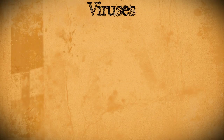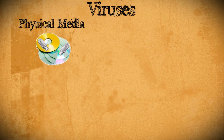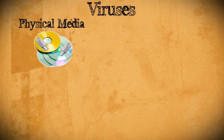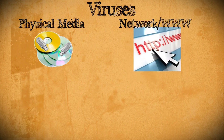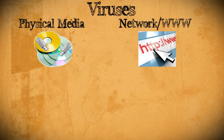There are typically two main ways to contract a virus. The first is through physical media like CDs, DVDs, or USB keys and things like that. The second way is through a network or internet connection such as the world wide web, torrents, and P2P programs.